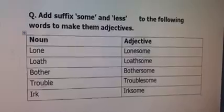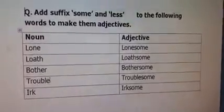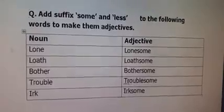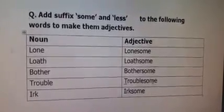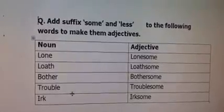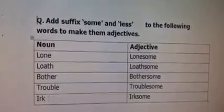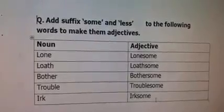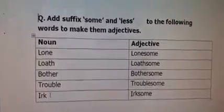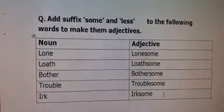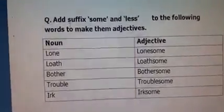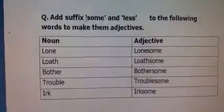And next word is trouble. Trouble means taklif. When we add -some with this word, it becomes troublesome. Troublesome means taklif deh, taklif dene wala. Next word is irk. When we add -some, it becomes irksome. Irksome means takawat wala ya taklif dene wala. Irk means taklif, and irksome means taklif dene wala ya thakan wala. Students, now we have solved the question by adding suffix -some.